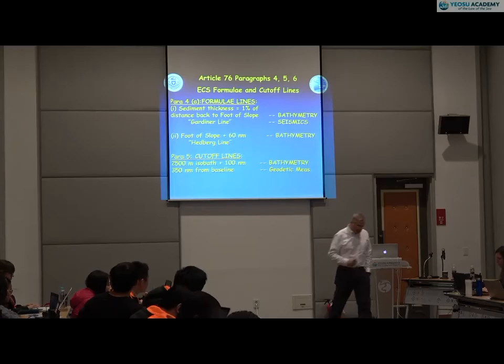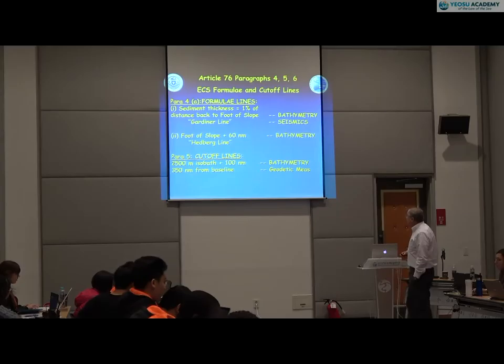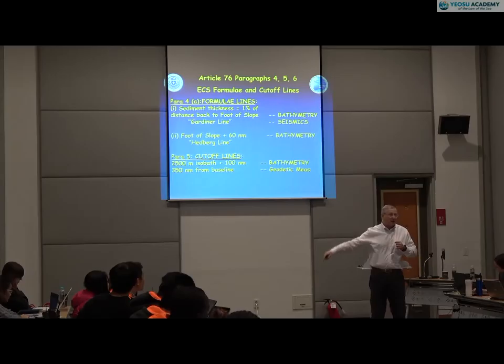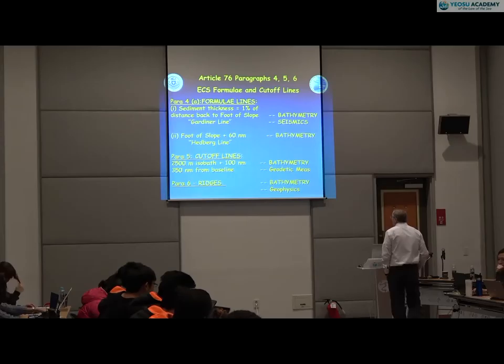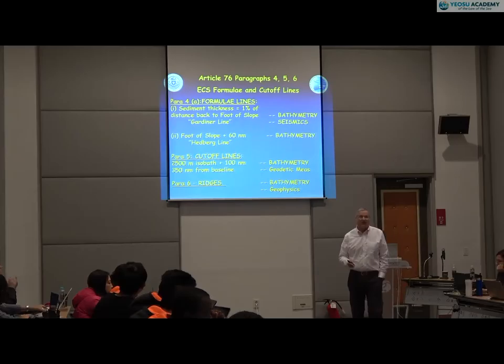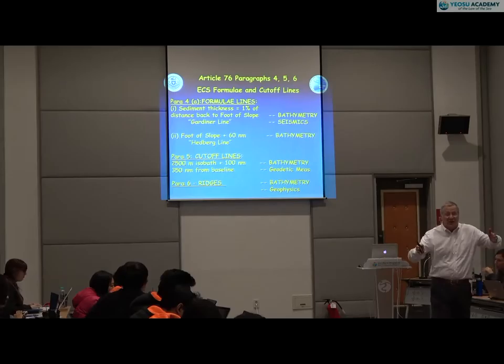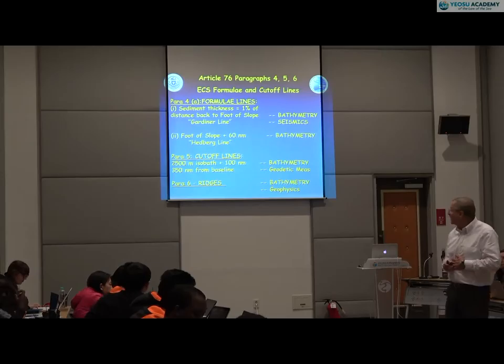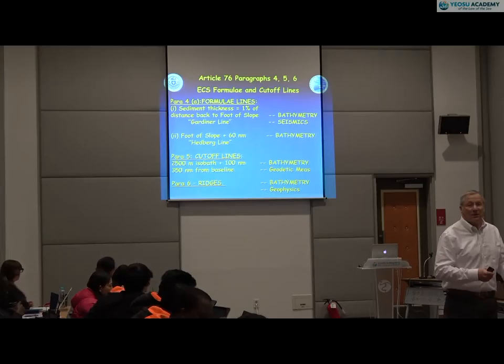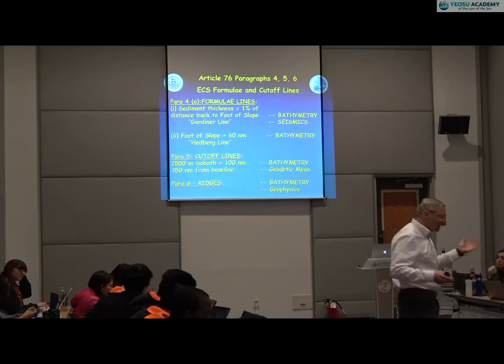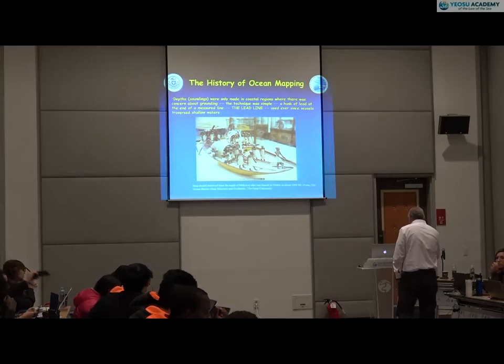For the cutoff lines, we need the 2,500-meter isobath plus 100 nautical miles — that's again the bathymetry — and the 350 nautical mile line from the baseline. For paragraph 6, the ridge issue, we need to determine whether we have a submarine ridge or elevation, whether it's a natural component. Part of that is bathymetry, but the natural component part involves understanding the geology and geophysics. We use gravity measurements and magnetic measurements for that.